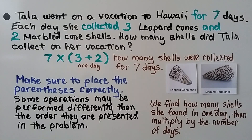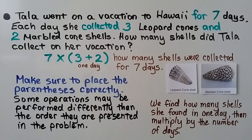We need to make sure to place the parentheses correctly. Some operations may be performed differently than the order they are presented in the problem. We find how many shells she found in 1 day first, then multiply by the number of days.